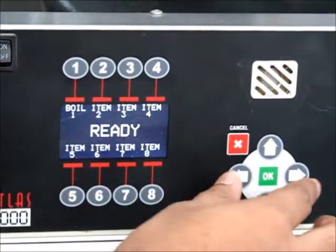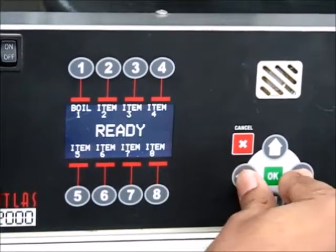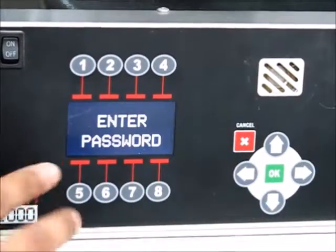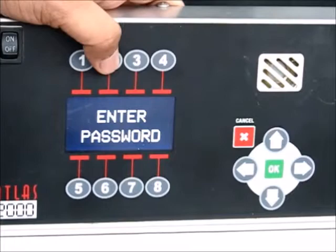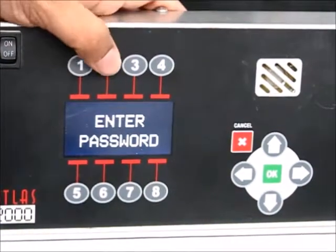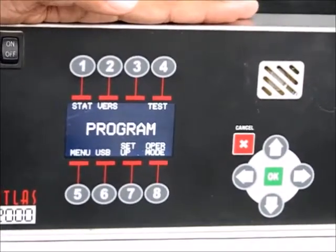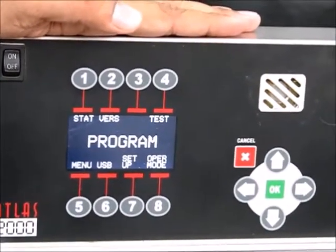To enter the program mode, press the left arrow button while also pressing the right arrow button. This will prompt enter password. Enter the password as 2, 1, 2, 1. You will now be in program mode.